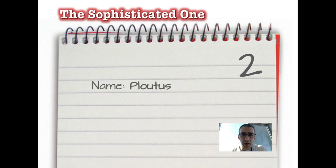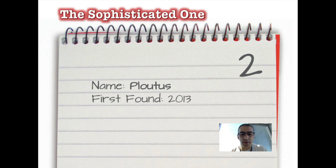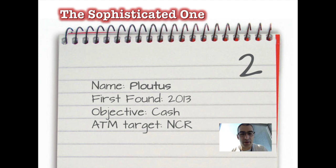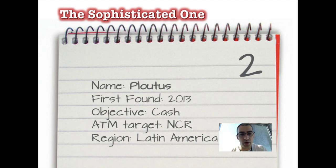Number two is against South America; the name is Plotus. First found in 2013, there have been many versions of it. A lot of these versions have the possibility of attaching different hardware — one version allows the bad guys to attach a phone with a SIM card and send commands to empty the safe by SMS. They can text the ATM and it empties the safe. It targets a very specific brand, and again, Latin America is a hotbed for this kind of malware.